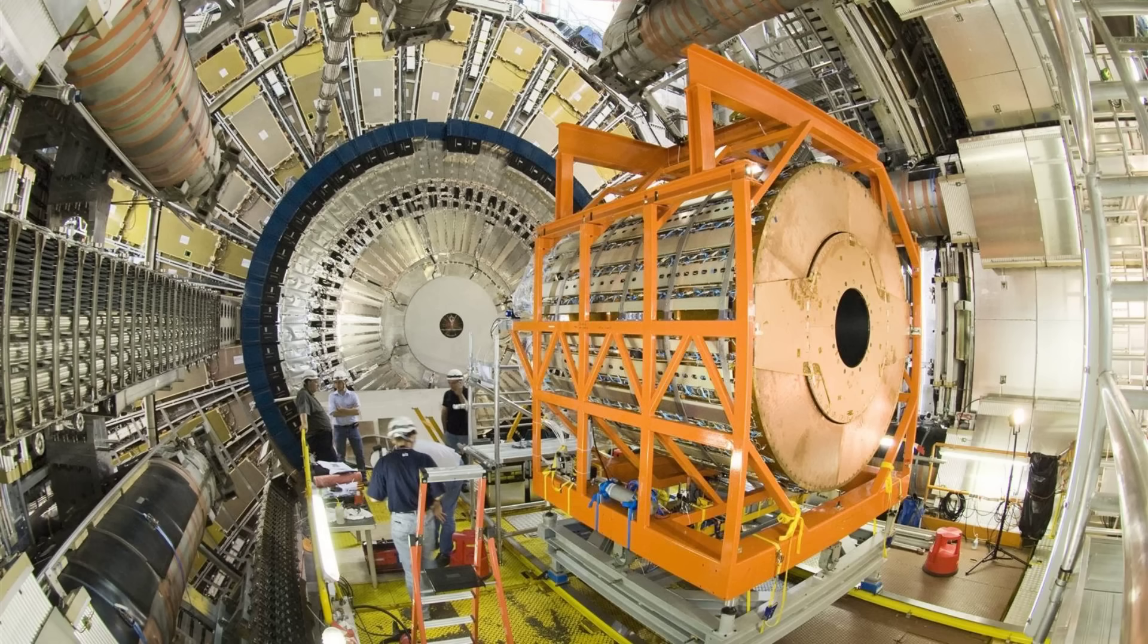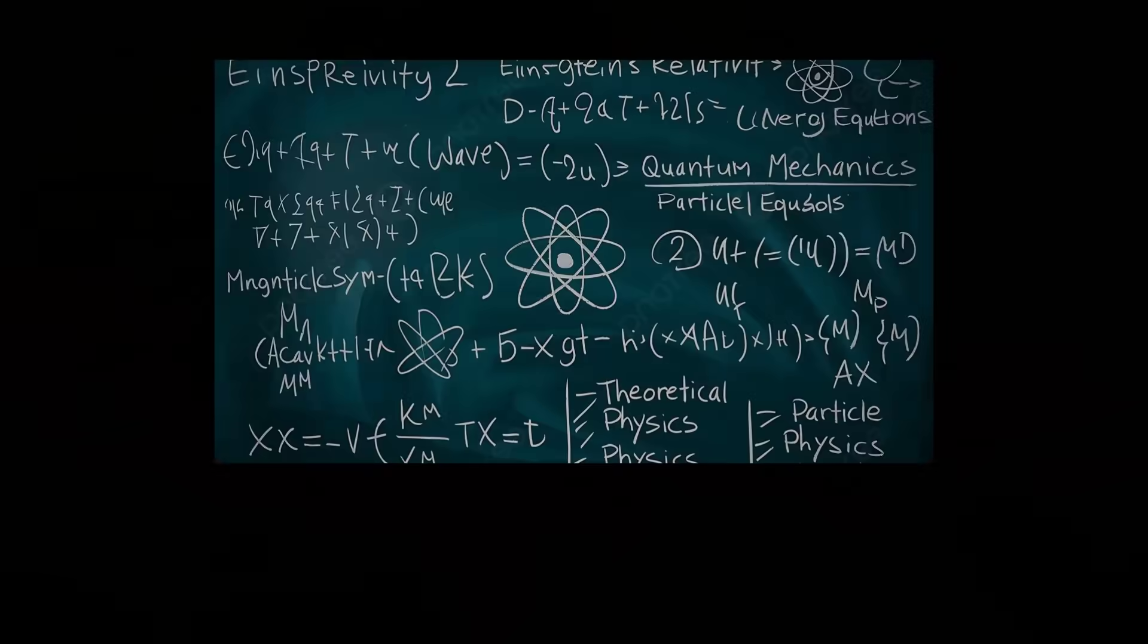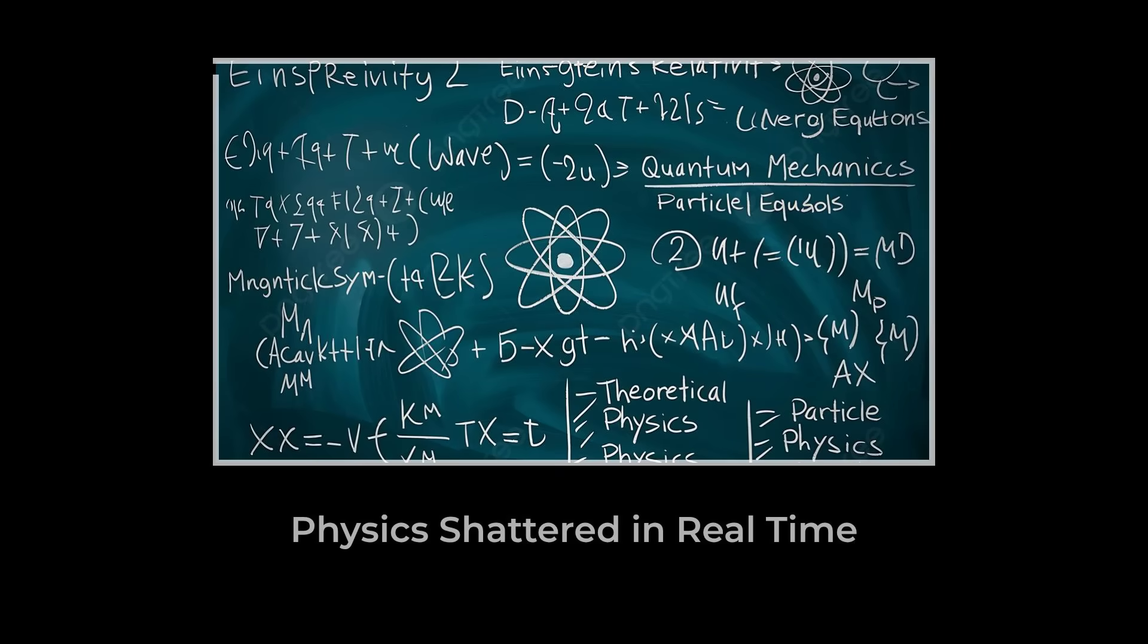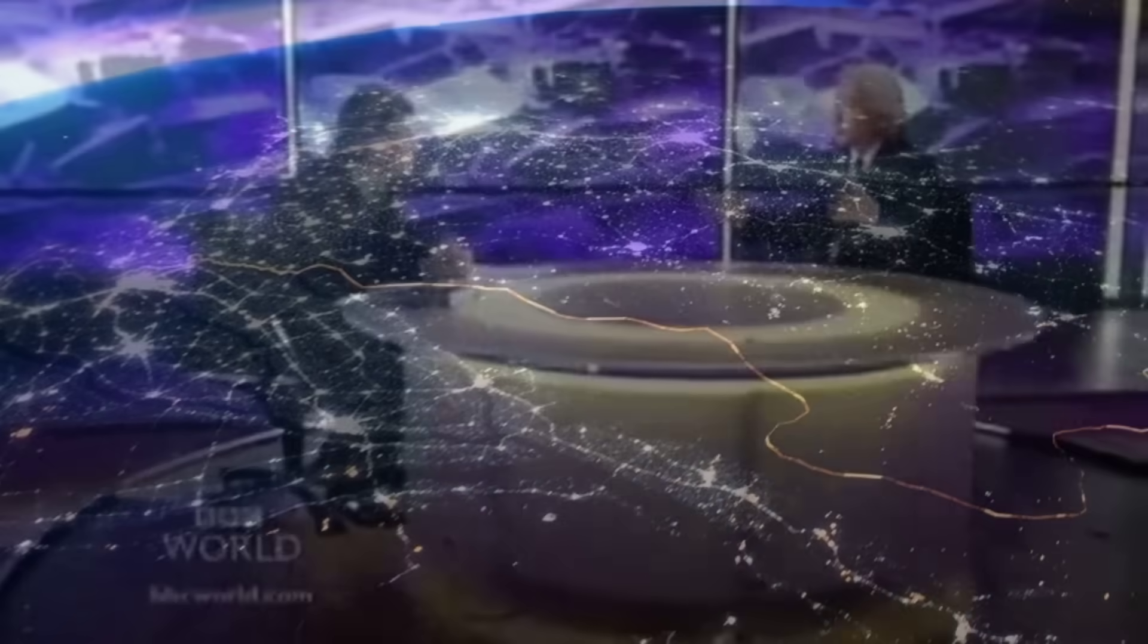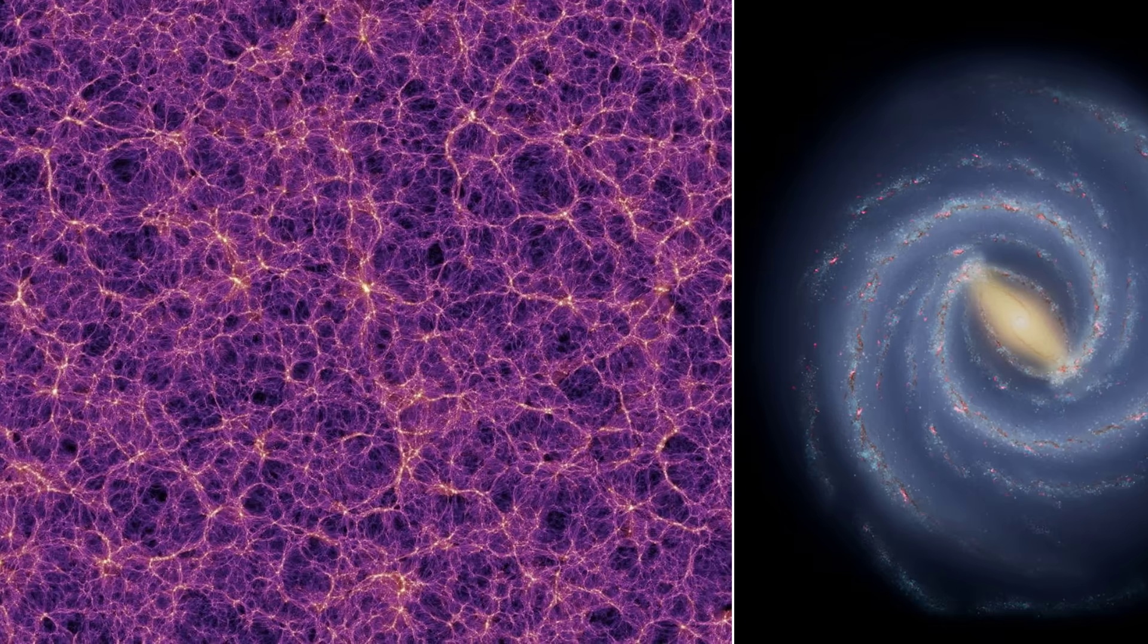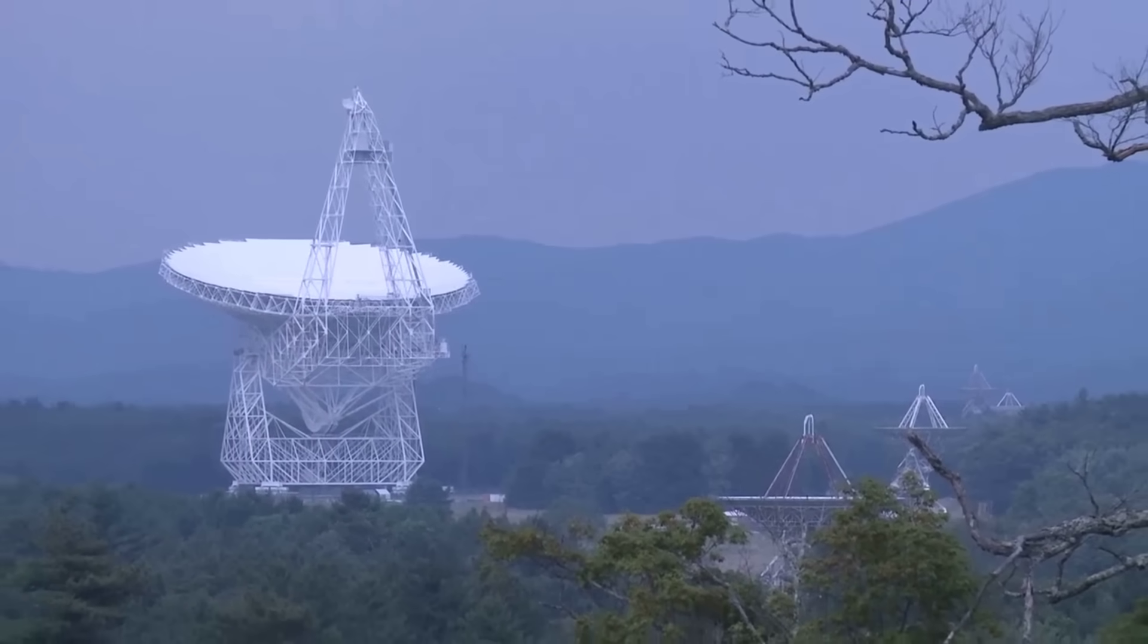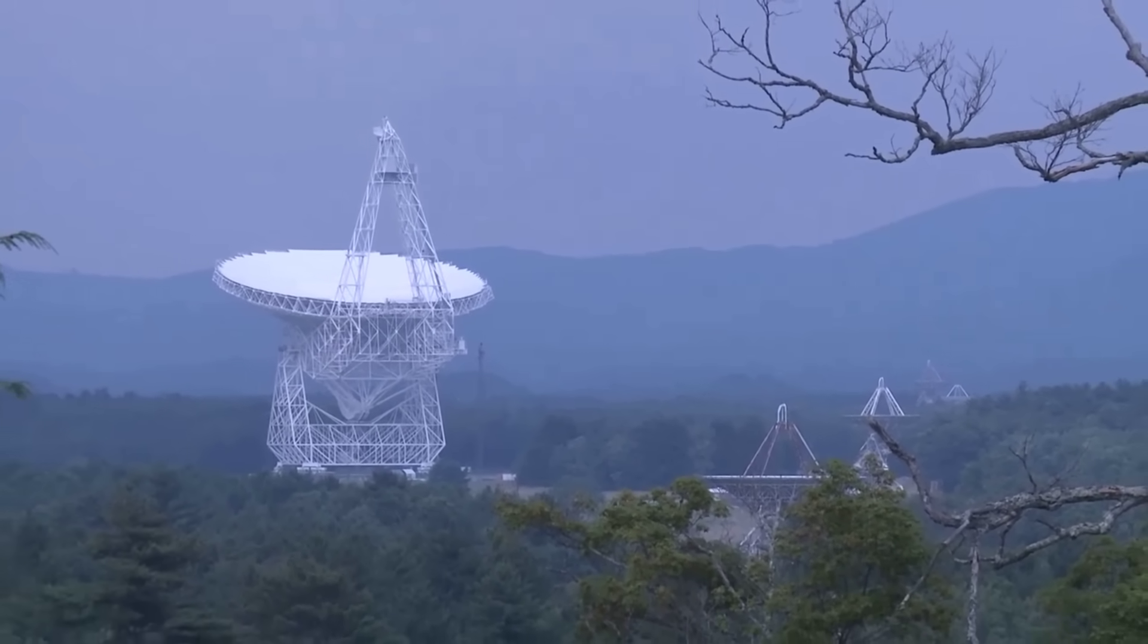Kaku warns it could catapult humanity into god-like danger or irreversible disaster. If this anomaly breaks the laws of physics, we could be standing at the edge of creation or destruction. What did Kaku see that made him sound the alarm, and why could this change the fate of the universe? The answer begins with a single, inexplicable pulse.